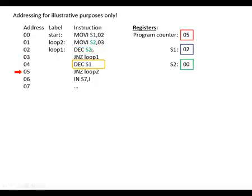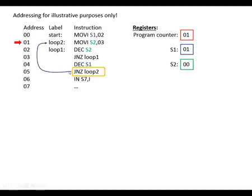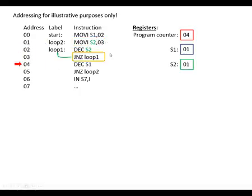Now the result is zero, so we carry on to the next line. We've done this inner loop three times, as set by the value loaded into S2. Next we subtract one from S1, making it one. That's not zero, so we load the program counter with the address for loop two — address 01 — and jump back up. There we reload three into S2 and carry out the inner loop three times again.